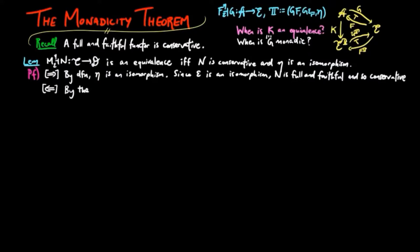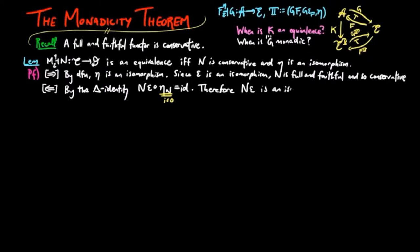Conversely, by the triangle identity for adjoint situations, we have N epsilon composed with eta N is equal to the identity on N. Then since eta is an isomorphism, N epsilon is an isomorphism as well. Therefore, epsilon is an isomorphism since N is conservative.